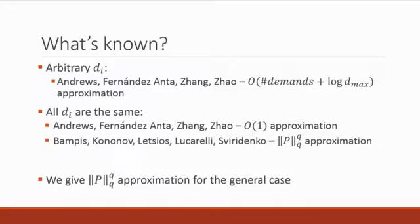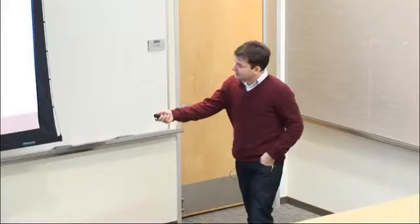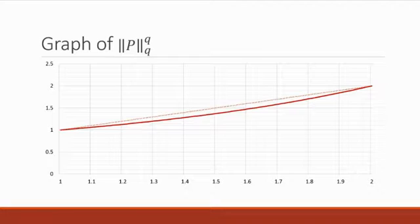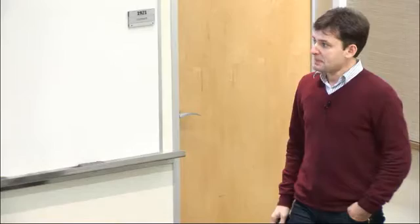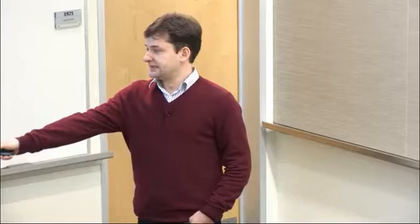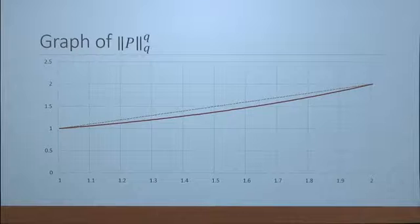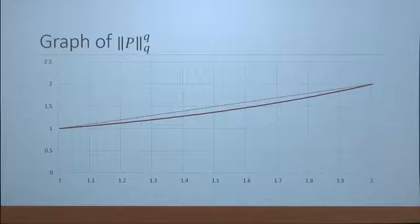In this paper, we generalize the result for arbitrary d_i's and introduce a framework usable for many different problems. The P^q value may look mysterious, so I plotted it in the most interesting regime — when q is between one and two, because for q greater than two you can do better with other techniques. This plot shows the q-th moment of the Poisson random variable, which is a convex function. At q=1 it equals one, at q=2 it equals two, so it is always strictly less than q. Particularly, we get a q-approximation when q is between one and two.